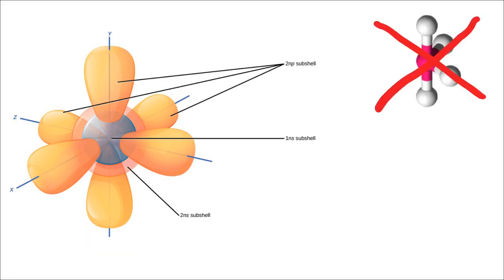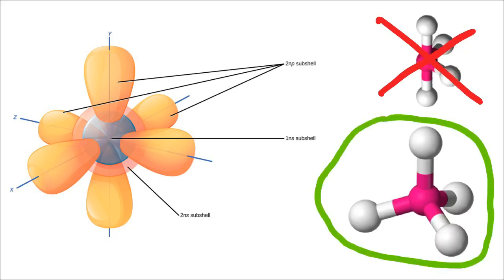The only problem is, when you go and shine light on methane and see what sorts of shadows it casts, you find out that the shape of methane is not that at all, but rather is this. And so you wouldn't predict that based on the orbitals that we already saw, the s and the p orbitals. So we have a disagreement between our theory and experiment.